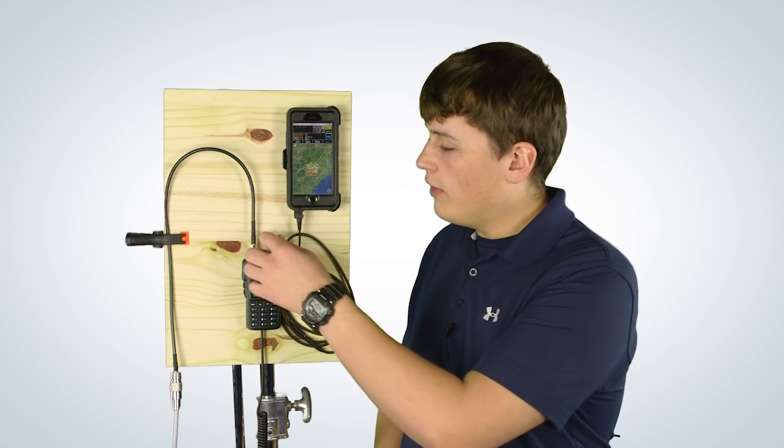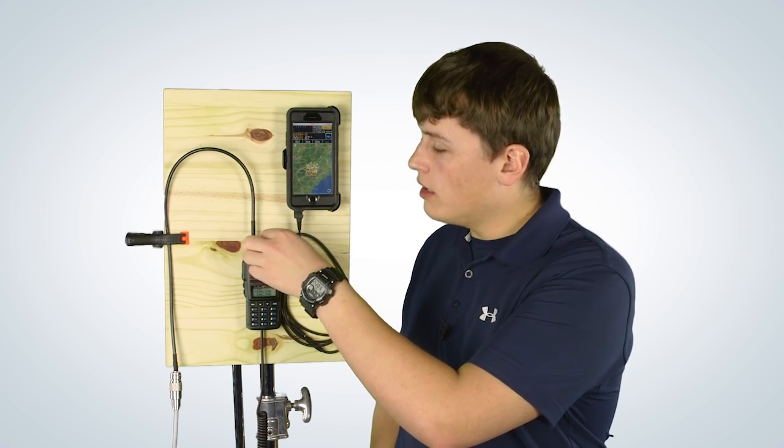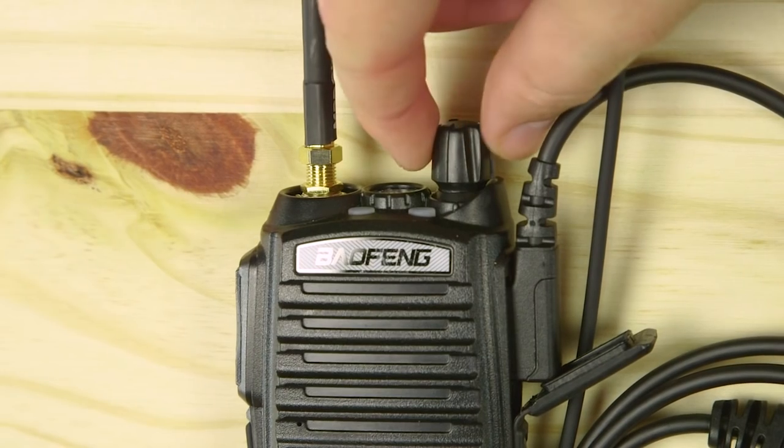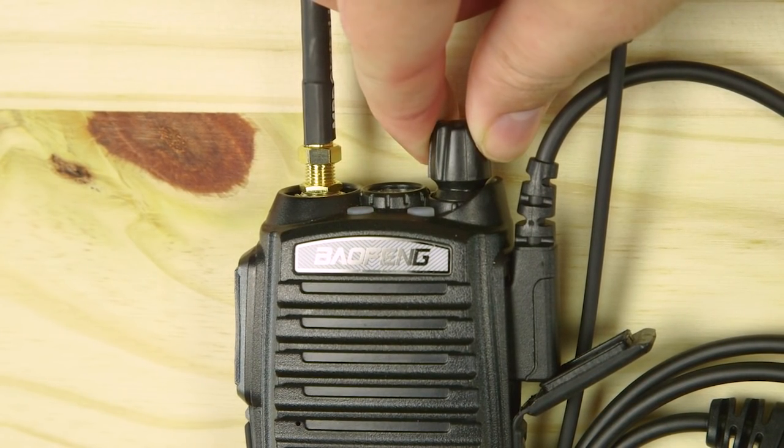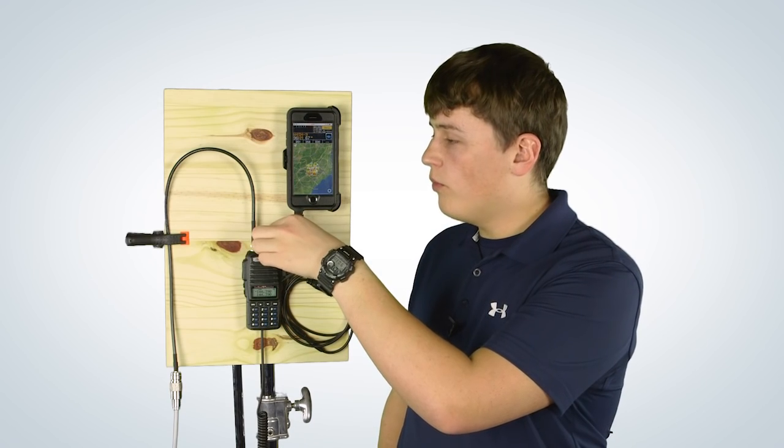Remember to silence all of your notifications like calls and texts. You do not want to be transmitting those notifications over the air. Once your app is running and everything is set, start with a low volume level, around one-fourth, and slowly increase until the app starts decoding data transmissions. This will usually happen between one-fourth and one-half volume.